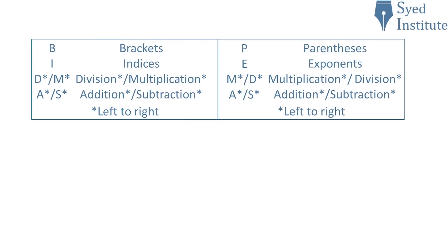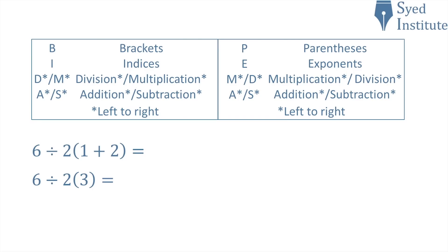Let's work through this question the way many people have been doing it. Depending on where you live, you may use BIDMAS or PEMDAS — they pretty much mean the same thing and tell us the order in which operations should be performed. Starting with the brackets first: 1 plus 2 is 3, so we end up with 6 divided by 2, and in brackets 3. The operation between the 2 and the 3 is multiplication, so it comes down to 6 divided by 2 times 3.